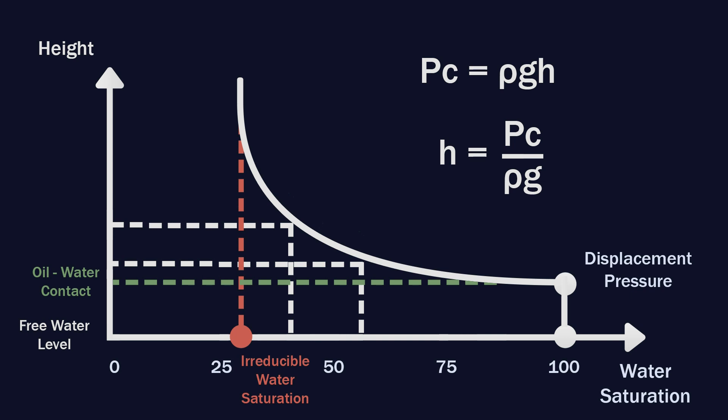The range of height at which saturation changes with capillary pressure changes is called transition zone. It is the zone where both oil and water are simultaneously produced if drilled.